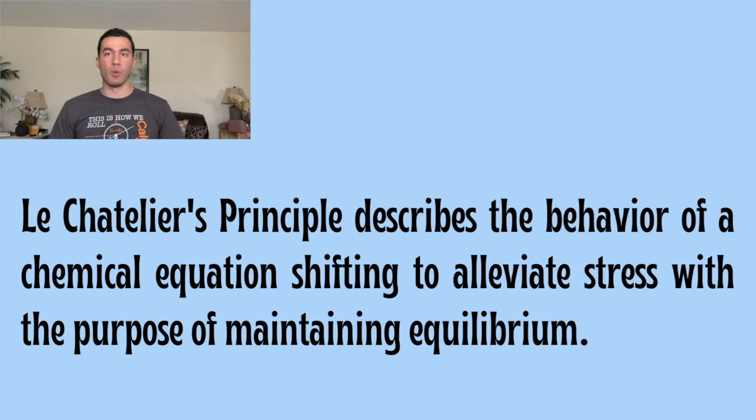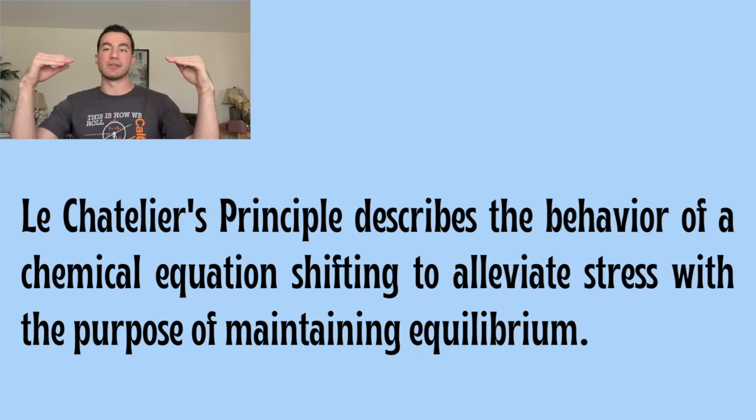Chemical equations want to exist in a state of balance in which you have the same concentration of reactants as you do with products. So a lot of times when you have an excess reactant or an excess product, it's going to shift in such a way that in the end, there will be an equal concentration of products to reactants, which is described as equilibrium.